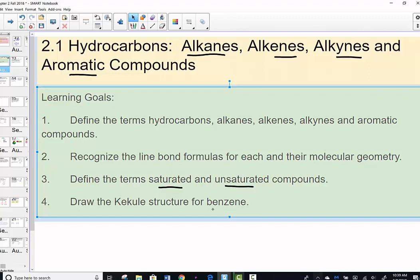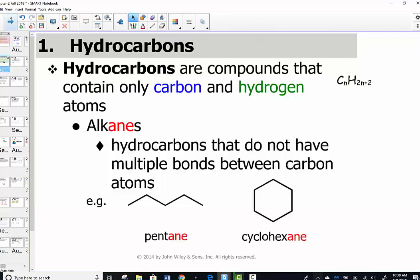I'd like to introduce the term hydrocarbon, that backbone of chemical compounds in the organic family. Of course, they contain carbon and hydrogen. The first of these hydrocarbons is an A-N-E, an alkane. Hydrocarbons that do not have multiple bonds between carbon atoms. Another way of saying that is all single bonds in the molecule. The general formula for an alkane is CnH2n+2.